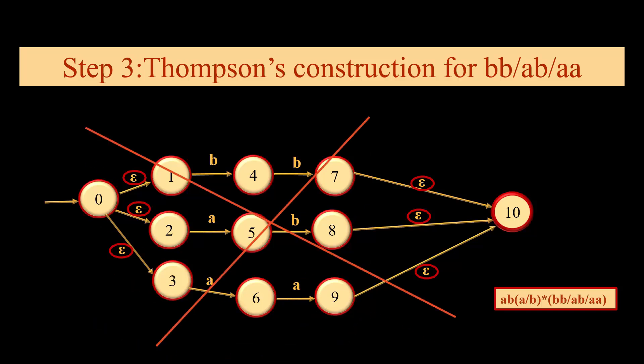Because as per Thompson's construction, you can maximum have two epsilon out moves from a single state. You can have n number of in moves to a particular state, but you can always have only two out moves from a state.